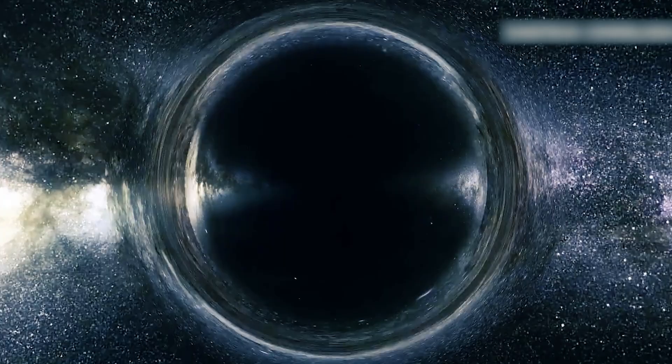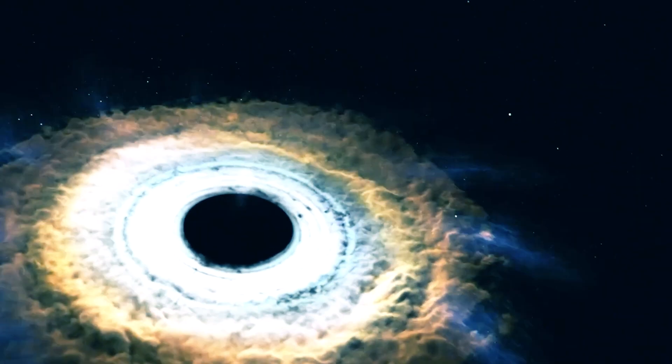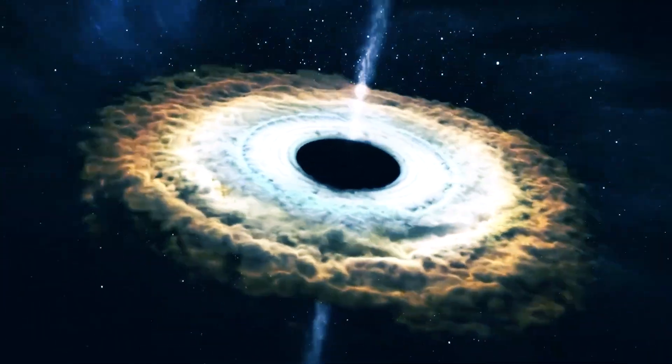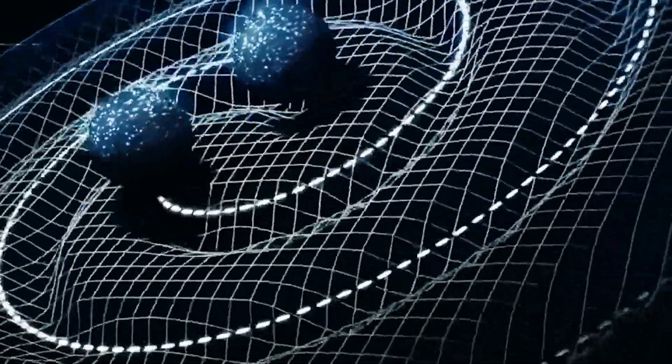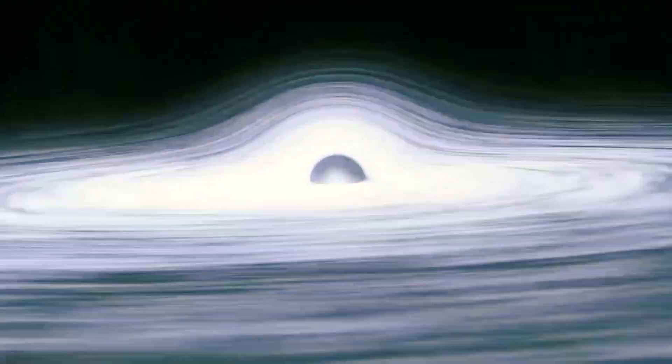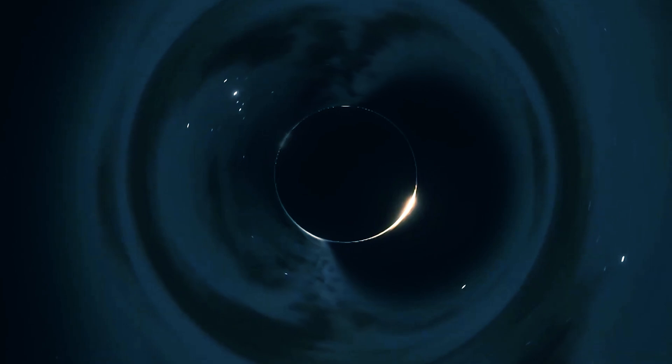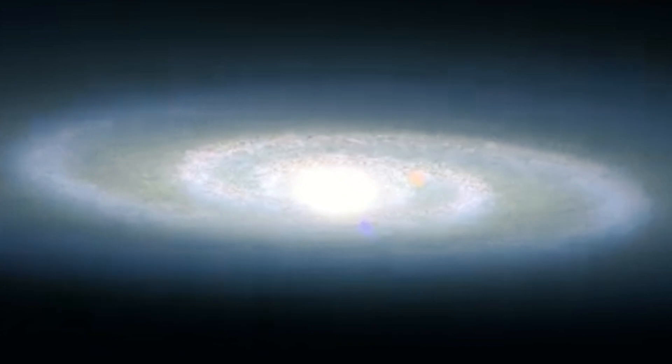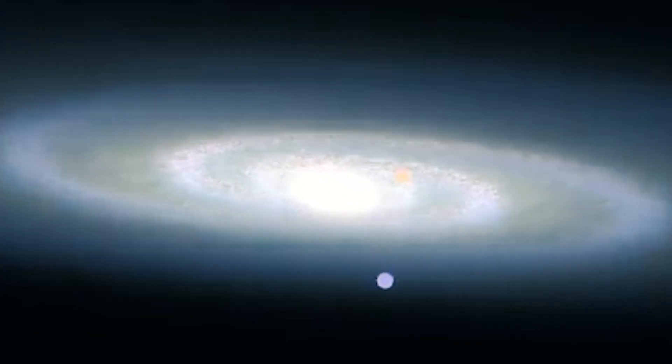So, what accelerated this star to such speeds? Researchers traced the star's trajectory back in time and found that it was ejected from the center of the Milky Way, where a black hole resides. Black holes are known to pull celestial bodies into them when they get close enough due to their strong gravitational pull. But it appears black holes can also propel celestial bodies into space at incredible speeds.